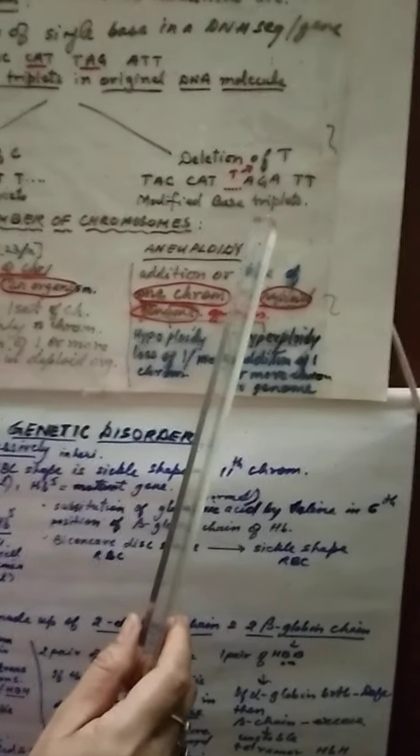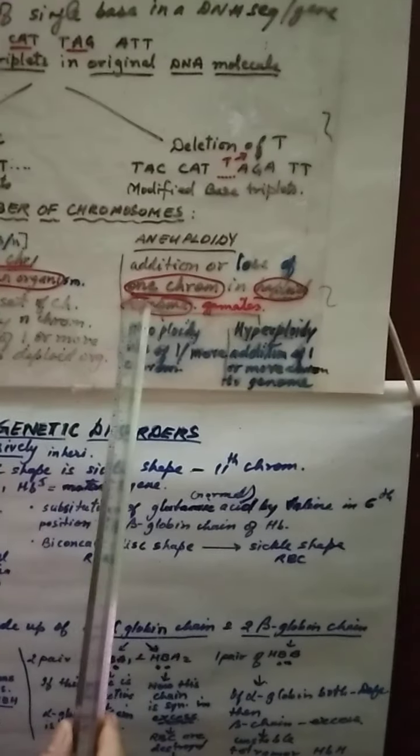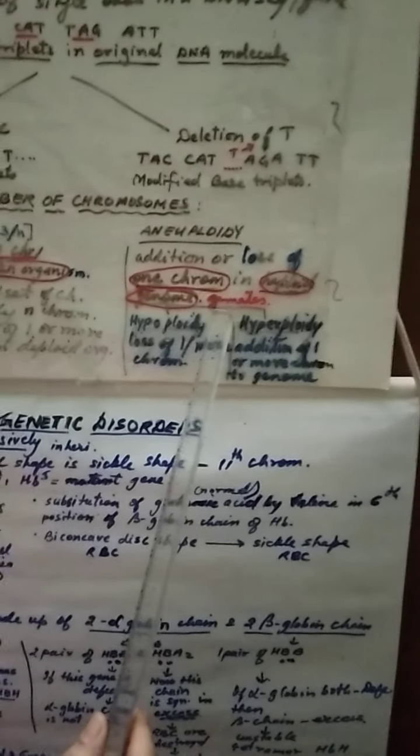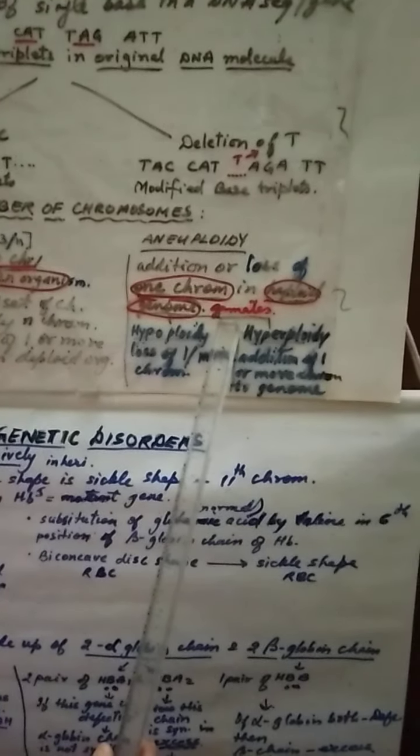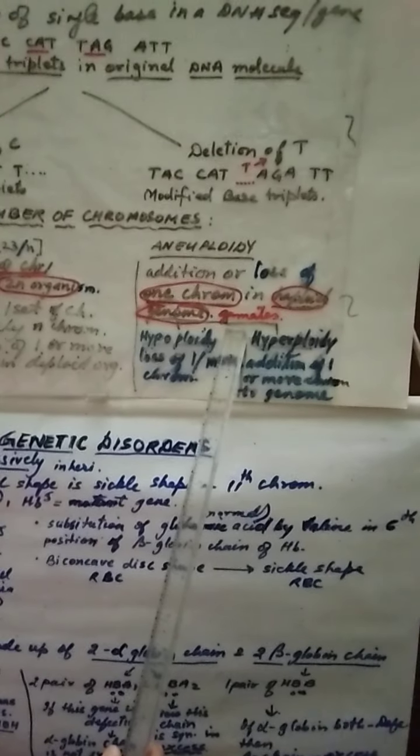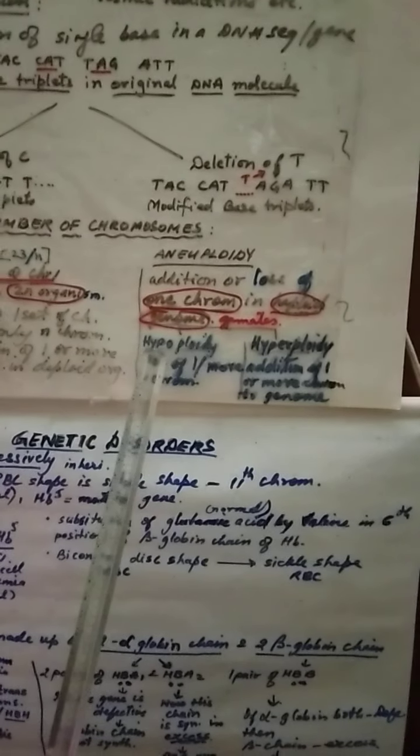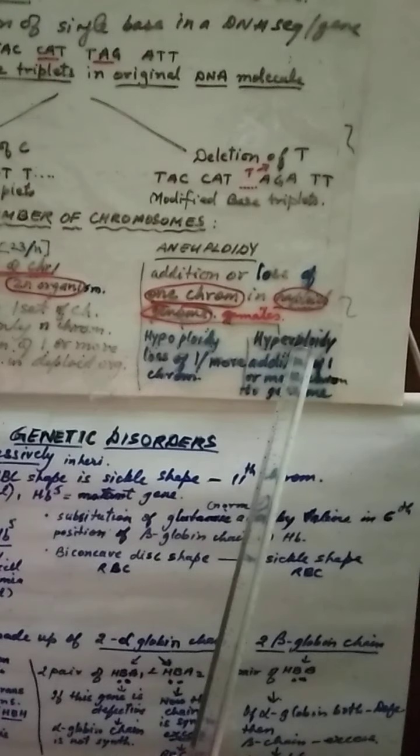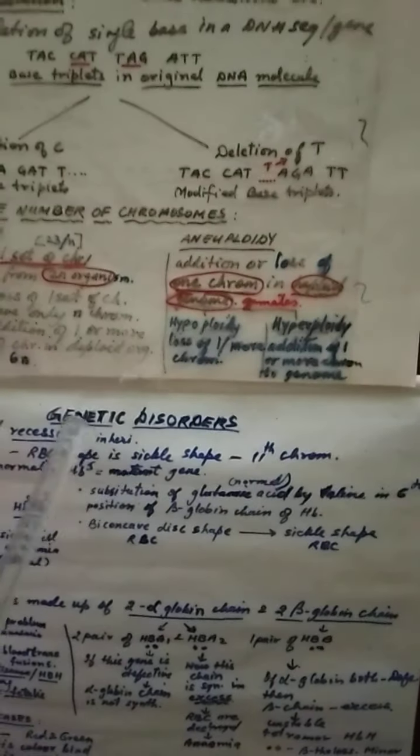Next is aneuploidy. Here there is addition or loss of one chromosome in haploid genome or gametes. So you know gametes have 23 chromosomes. And if there is addition, it can be 24. If there is minus, it can be 22 only. Such a condition is called aneuploidy. And if there is loss, it is called hypoploidy. If there is addition in the gamete chromosome, it is called hyperploidy.